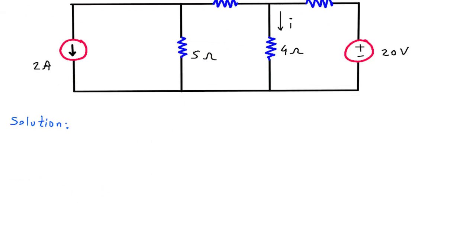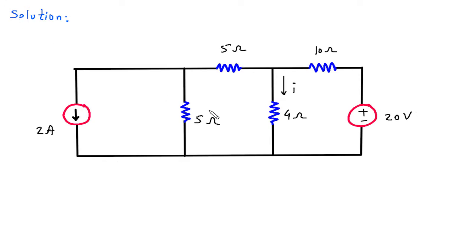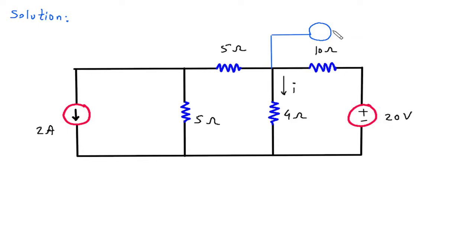First of all we will redraw the circuit. Now we will convert this voltage source into its equivalent current source. This will be a current source in parallel with this 10 ohm resistor because it is in series with this 20V voltage source. So its equivalent current source will be in parallel with this 10 ohm.